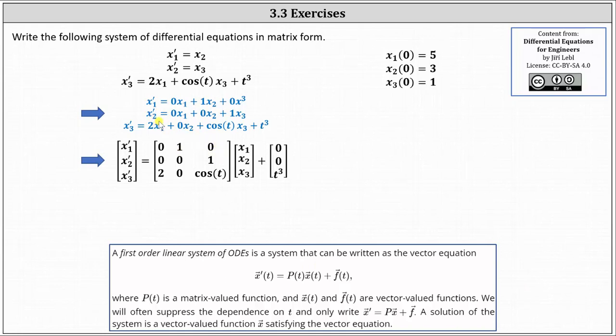For the next equation, we have x2 prime equals 0x1 plus 0x2 plus 1x3. This indicates the second row is 0, 0, 1. And then for the third equation, we have x3 prime equals 2x1 plus 0x2 plus cosine t x3 plus t squared. We're not working with the t squared yet, and therefore the third row of P of t is 2, 0, and cosine t.